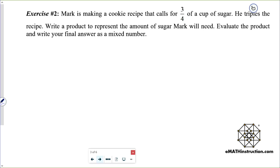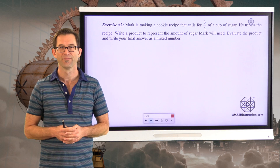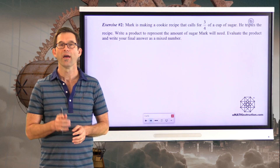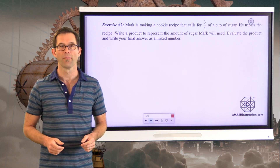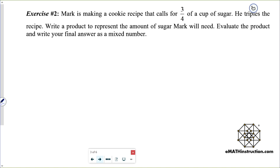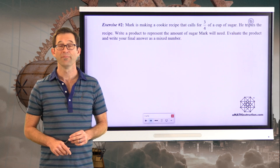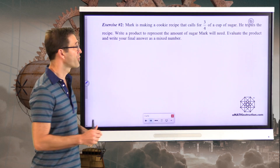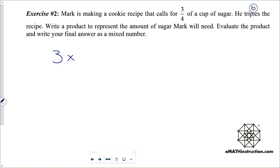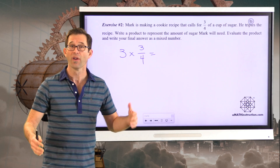Exercise number two, a nice applied problem. Mark is making a cookie recipe that calls for three-quarters of a cup of sugar. He triples the recipe. Write a product to represent the amount of sugar Mark will need and evaluate the product, writing your final answer as a mixed number. When we triple something, it means we multiply it by three. So what we have is three times three-fourths. If I have three of three of something, then I have nine of those things.